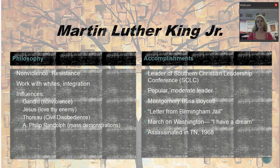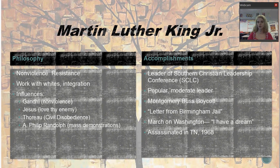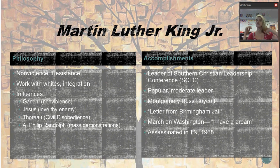In terms of his accomplishments, he founded the Southern Christian Leadership Conference, or SCLC, which is the main organization that conducted a lot of the protests Dr. King was involved in. He is seen as a more moderate leader, with a lot of whites and blacks on his side. He was the leader of the successful Montgomery bus boycott. When he was arrested in Birmingham for his protests — that civil disobedience idea — he wrote a letter called the Letter from a Birmingham Jail, one of the most important documents from him.